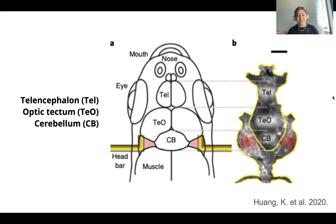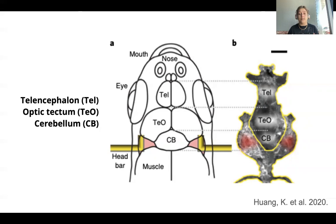First, we're going to be looking at some of their basic zebrafish brain anatomy. We're looking at the top view of their head here. We see the telencephalon, TEL, which is homologous to the limbic system. And then we have the optic tectum behind that, TEO, and that is a visual processing area. It's very large due to the fact that they are a highly visual species. And then behind the optic tectum is the cerebellum, and that is homologous to the mammalian cerebellum.